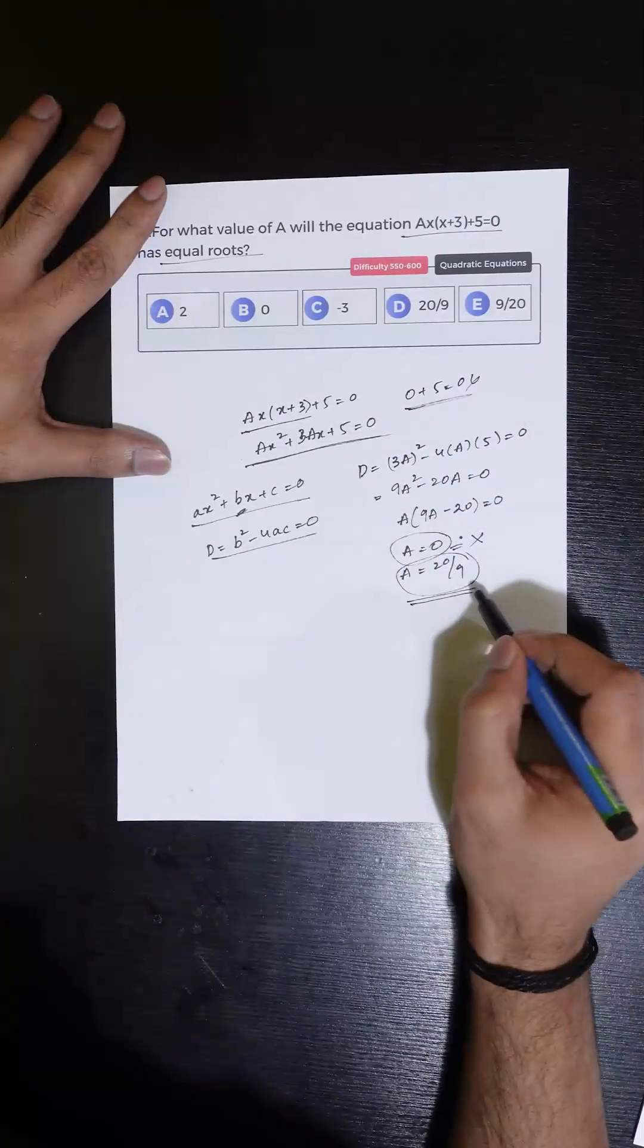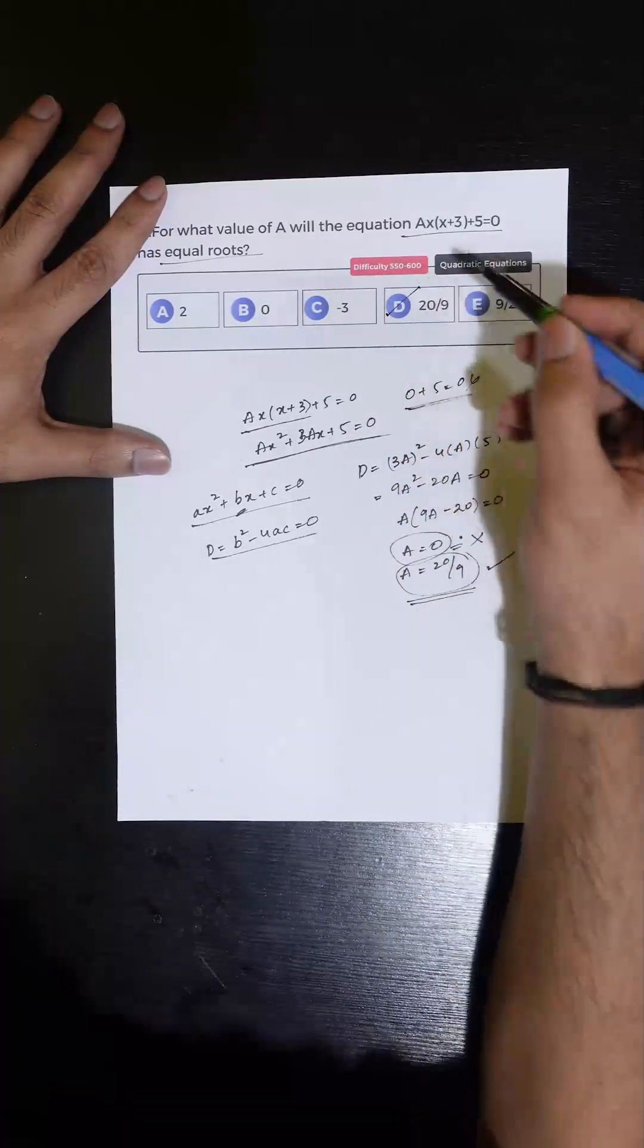So the only possible value of A is 20/9, and the correct answer is Option D.